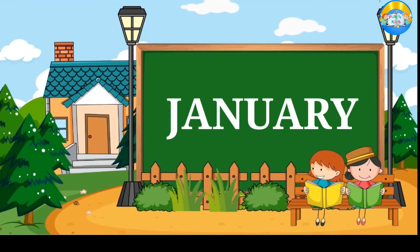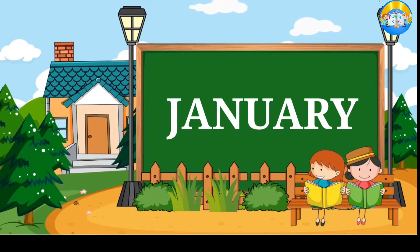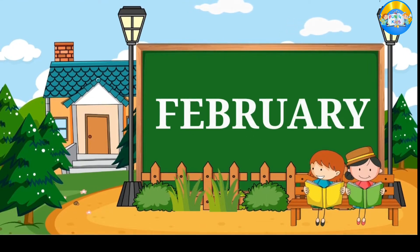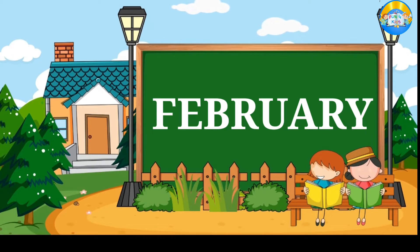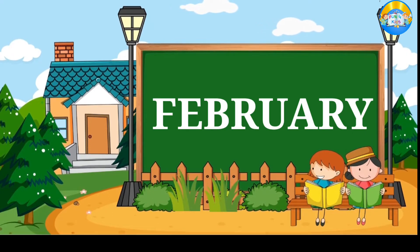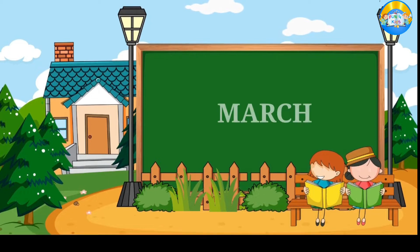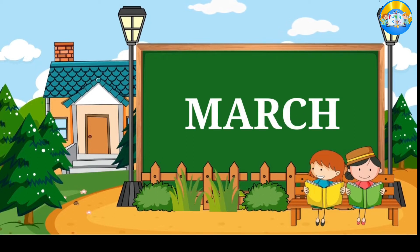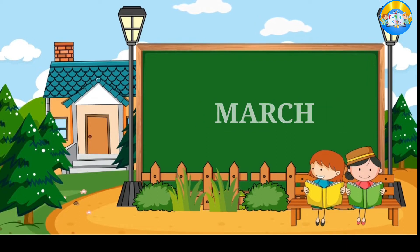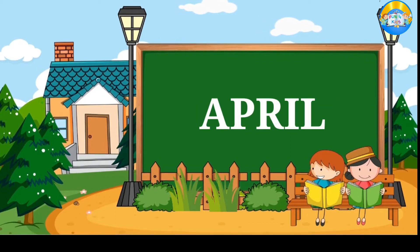January. January is the first month of the year. February. February is the second month of the year. March. March is the third month of the year. April. April is the fourth month of the year.